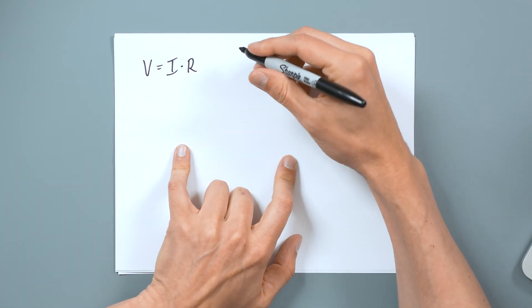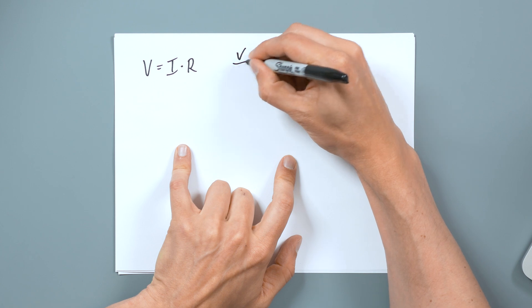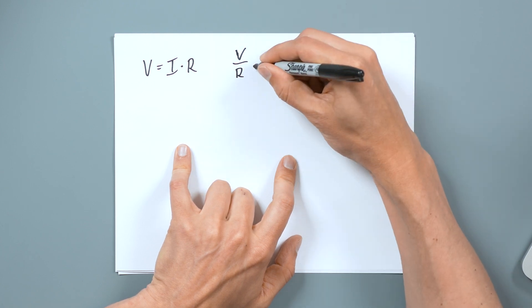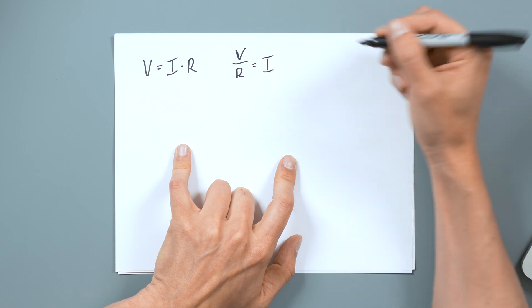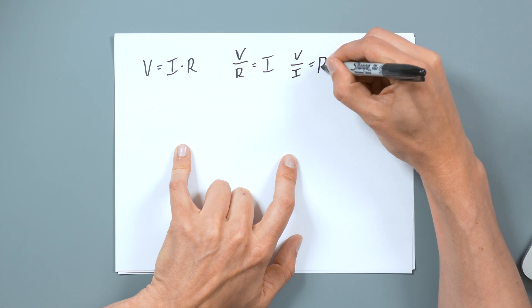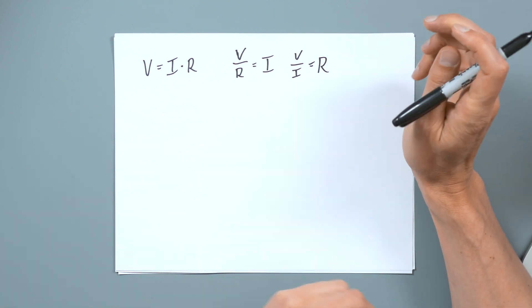And that can very easily mathematically be switched. So you have voltage over the resistance equals current. And honestly, we could do voltage over current equals resistance, you can move this thing around however you want.